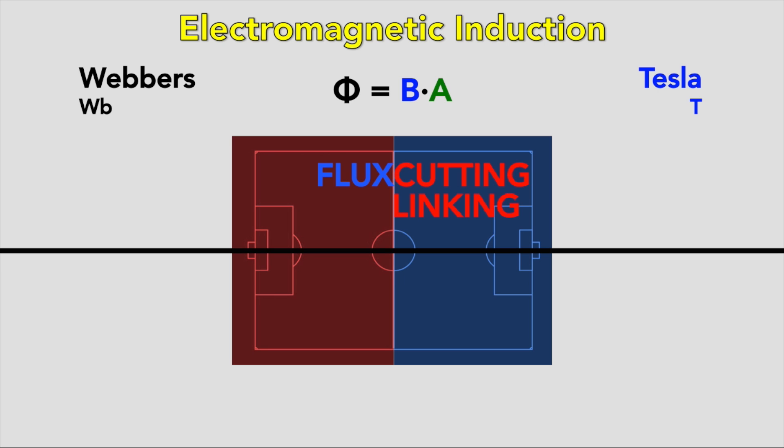The magnetic flux Φ passing through area A perpendicular to magnetic field B is given by Φ = BA, where Φ is measured in Webers and B is measured in Teslas. The flux linkage is the product of the number of turns on the coil cutting the flux, given by NΦ = BAN.